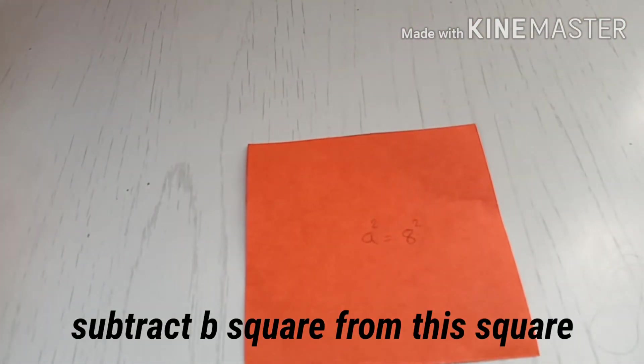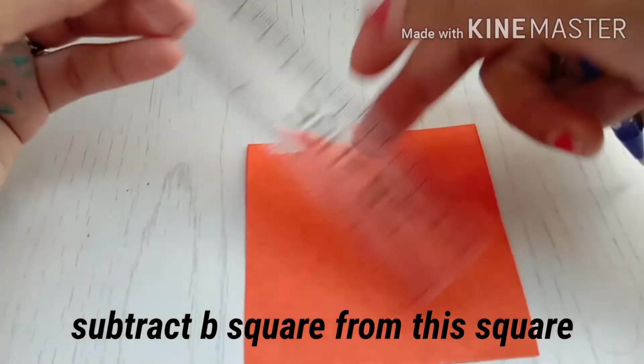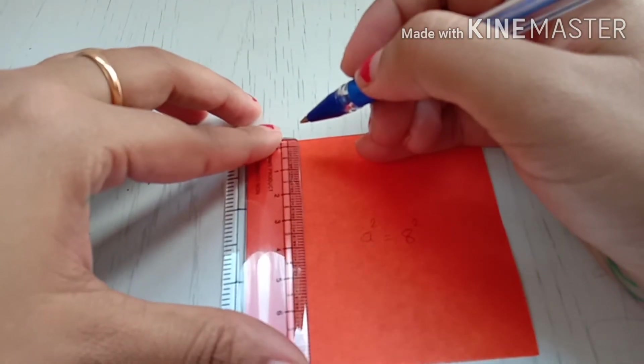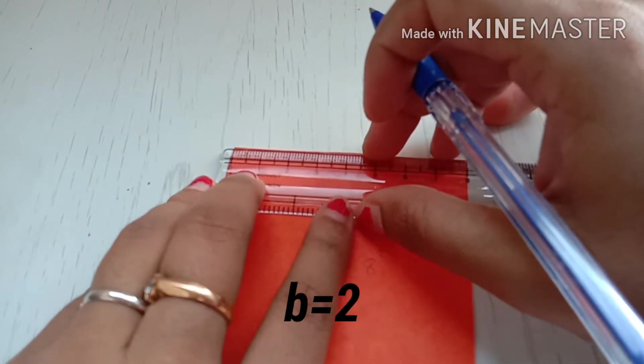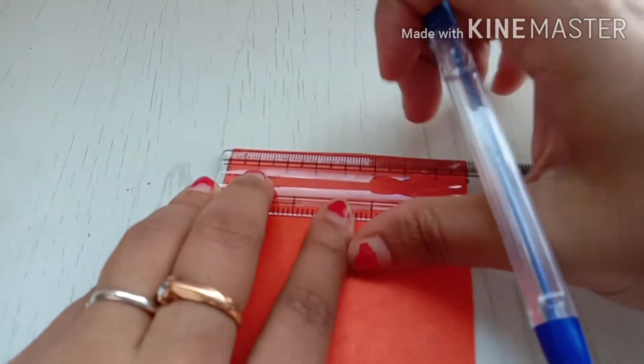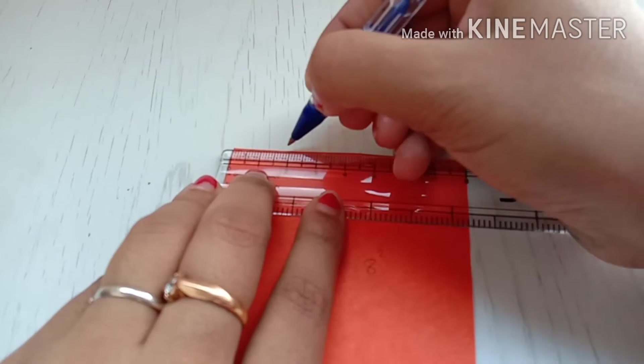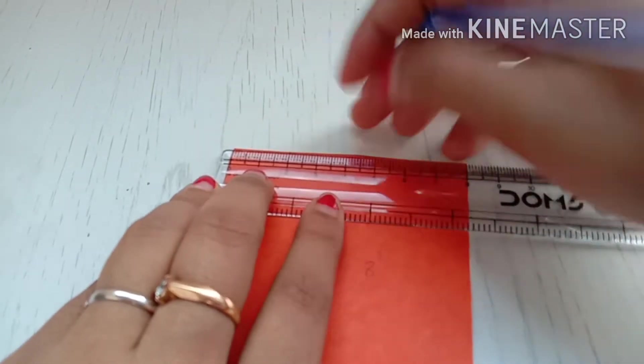I am taking the value of b as 2 here, so I am going to draw a square of 2 centimeters.